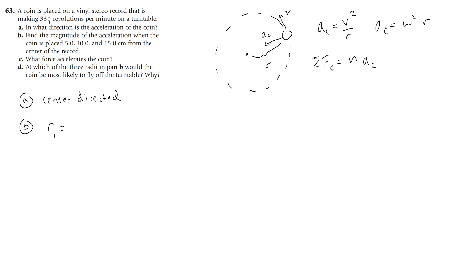So like, I can call this R1, and it would be 0.05 meters, because there are 100 centimeters in a meter, and then 0.1 meters, call this R3, 0.15 meters.